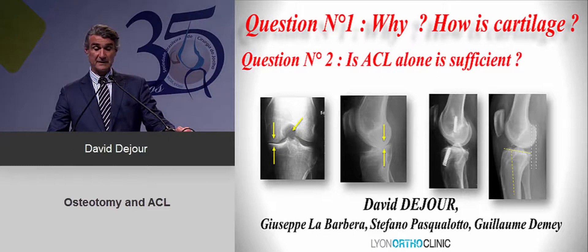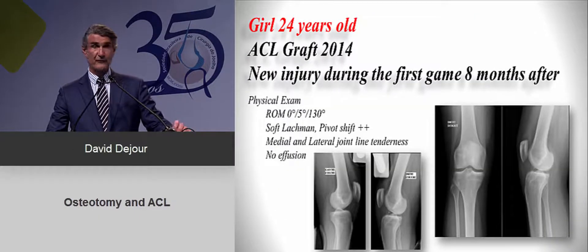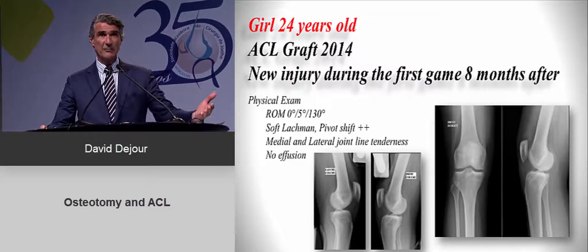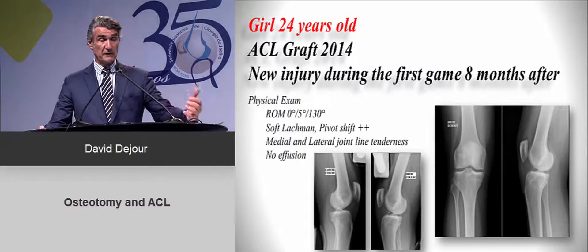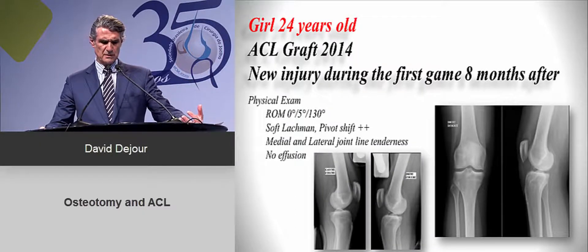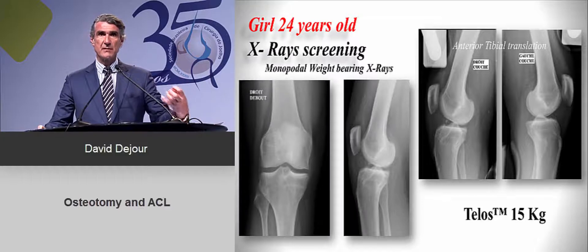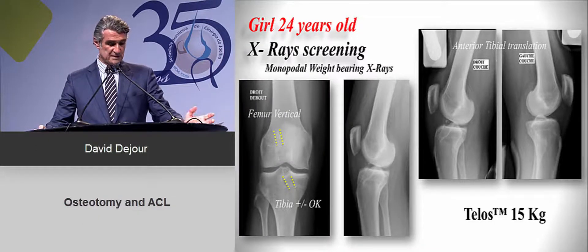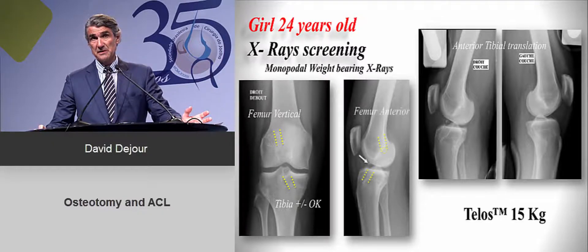This is definitely true, for example, for this 24-year-old girl who had an ACL graft in 2014. When she went back to sports eight months after, she re-ruptured the ACL. If you look at the physical exam, it's pretty normal except for the ACL. You do some X-rays — and the X-rays are very important. You look at monopodal weight-bearing X-rays with perfect alignment of both condyles. You can see where the tunnels were: this one was too vertical on the sagittal and too anterior.